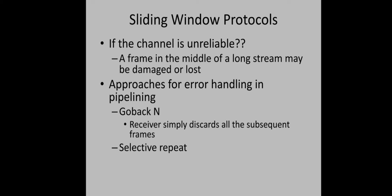Go-Back-N — from the name itself: if the receiver receives a frame in error, it simply discards all subsequent frames. The sender will time out after some time for the damaged frame and retransmit all frames again starting from the damaged one. The problem is that if there is a high error rate, a lot of retransmission will be required, negatively affecting channel efficiency. To reduce retransmissions, we use the second approach: Selective Repeat.